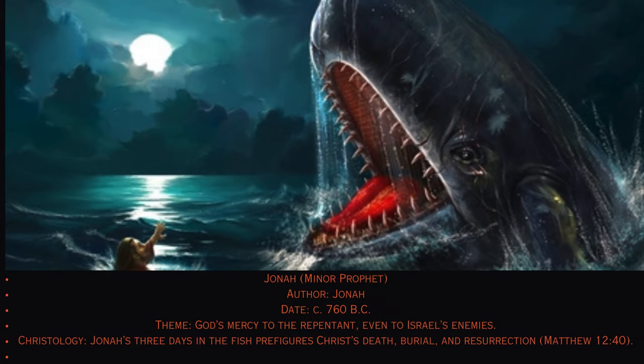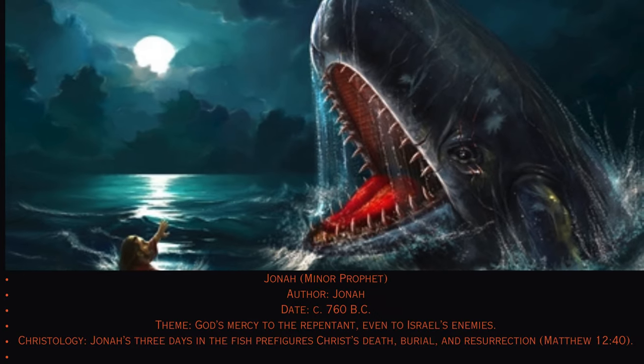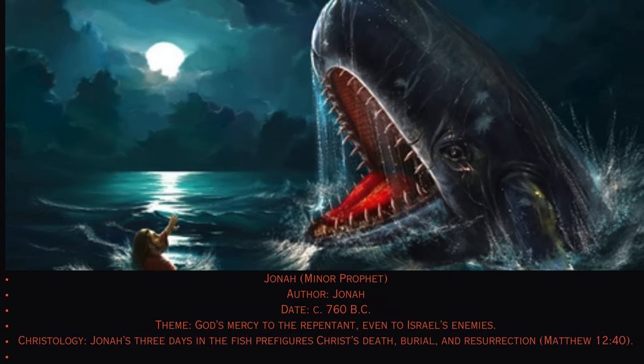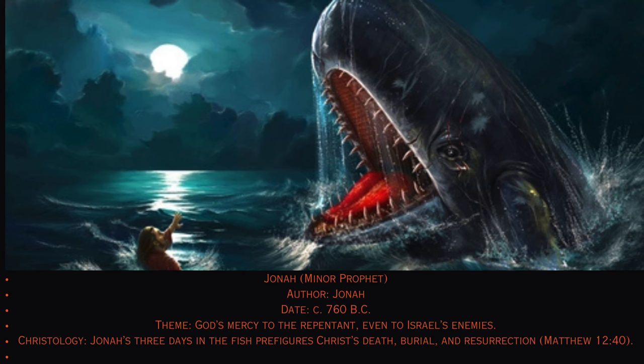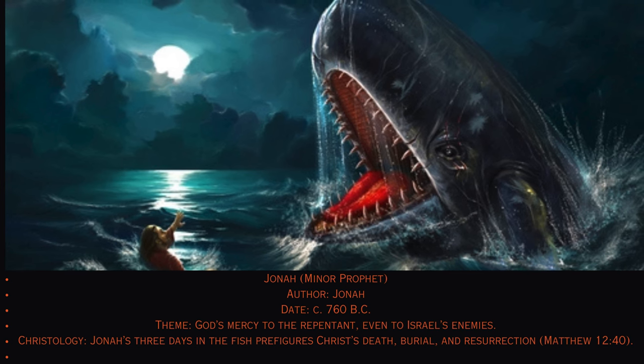32. Jonah. Minor prophet. Author: Jonah, circa 760 B.C. Theme: God's mercy to the repentant, even to Israel's enemies. Christology: Jonah's three days in the fish prefigures Christ's death, burial, and resurrection (Matthew 12:40).